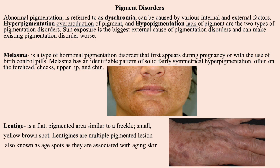Pigmentation disorders — referred to as dyschromia — can be caused by various internal and external factors. Hyperpigmentation is overproduction of pigment; hypopigmentation is lack of pigment. Sun exposure is the biggest external cause and can worsen existing disorders. Melasma is a hormonal pigmentation disorder that first appears during pregnancy or with the use of birth control pills, presenting as solid, fairly symmetrical hyperpigmentation on the forehead, cheeks, upper lip, and chin. Lentigo is a flat pigmented area similar to a freckle — small yellow-brown spots also known as age spots.